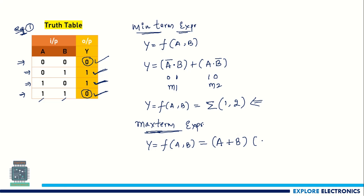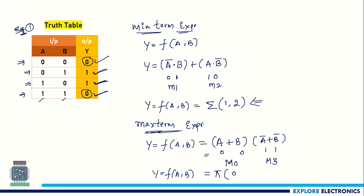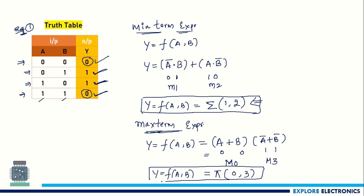In place of 0 we are supposed to write it as the true component a, and since it is a max term we write it as plus, and b is also 0 so b as it is. This is one term. Now for the other 0 in the truth table output, a is 1 and b is 1. So if it is 1, 1 — I write it as a-bar plus b-bar. This is the switching expression for the max term. Decoding: 0, 0 is max term M0, and 1, 1 gives a-bar, b-bar which is max term M3. So y equals f(a,b) equals pi of (0, 3). This is the max term expression for the given truth table.